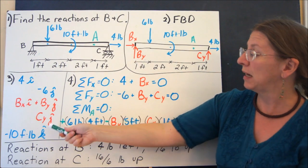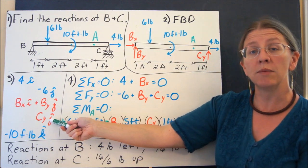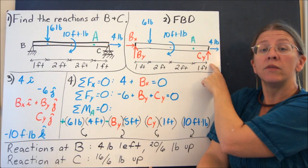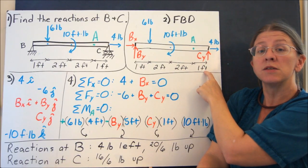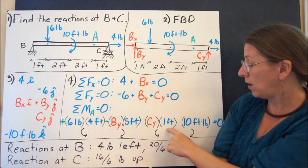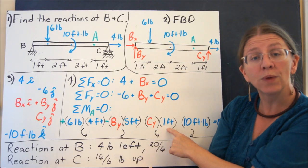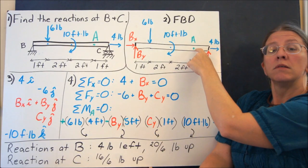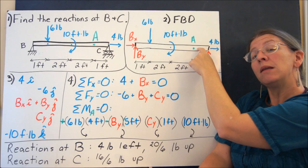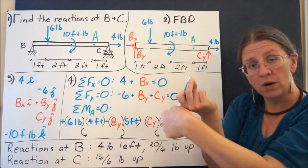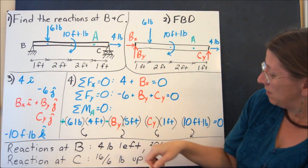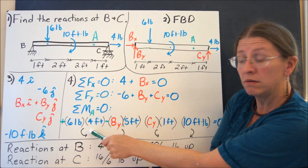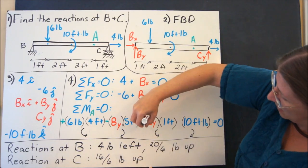Now let's keep going through my list. Does CY create a moment at A? Yes. A does not lie along the line of action of CY. It acts at a distance of one foot. So I have CY times one. What direction does that tend to spin this? If I put my finger right there, CY would tend to spin the beam counterclockwise. So I want to make sure that this sign matches that one. I made that positive, so I'm going to make this one positive.